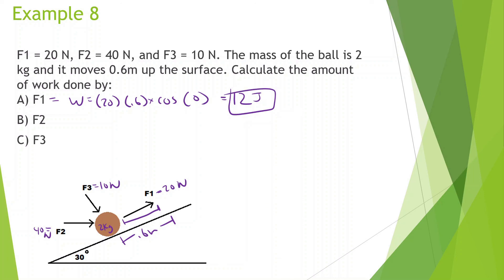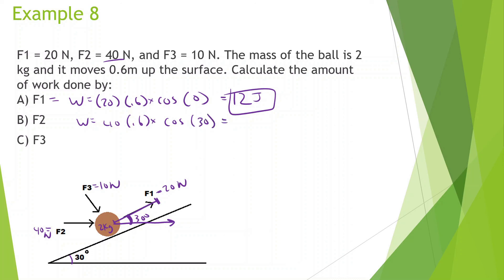For F2, the force is going directly horizontally while the displacement is up the ramp, so the angle between them is 30 degrees. Work done by F2 equals 40 times 0.6 times cosine of 30 degrees, which equals 20.8 joules.